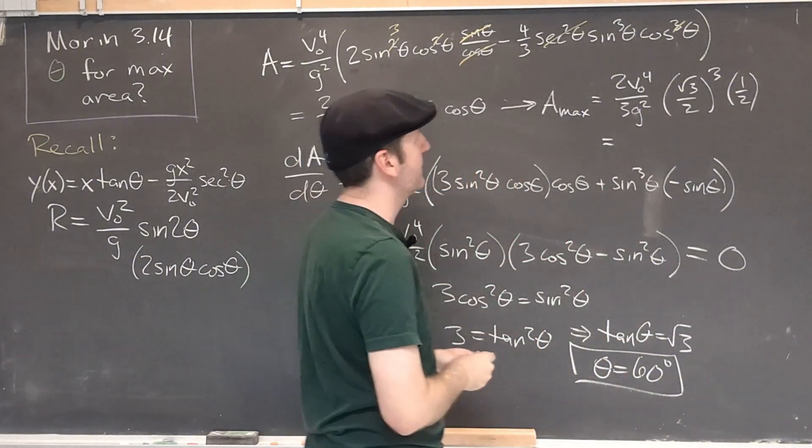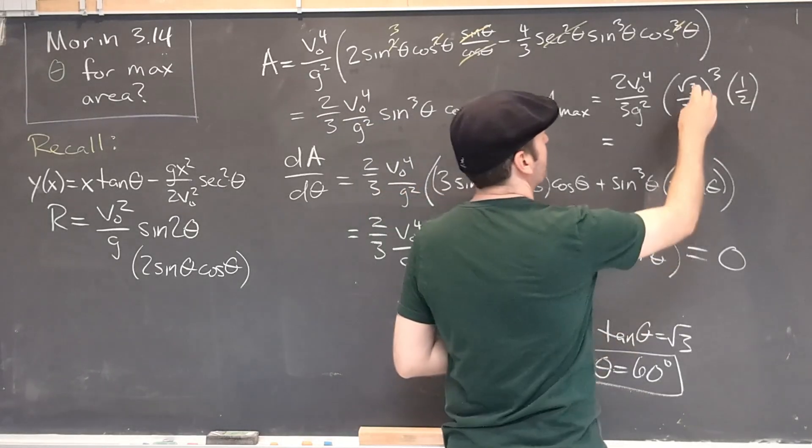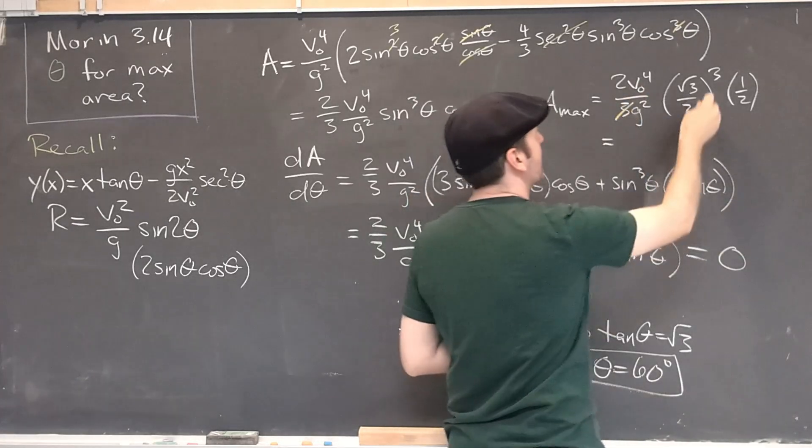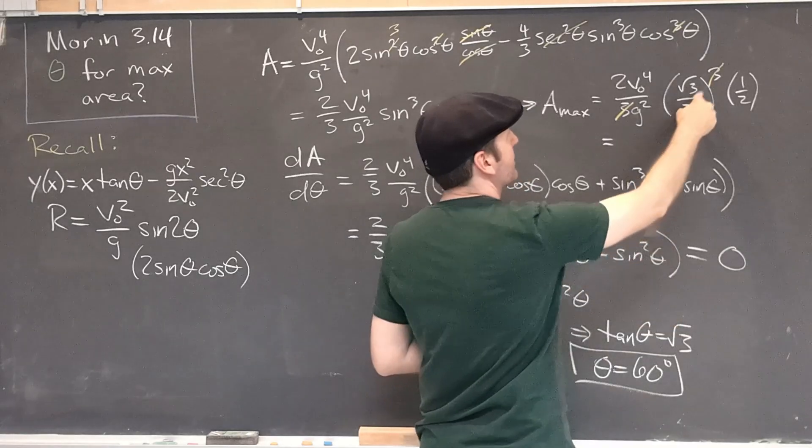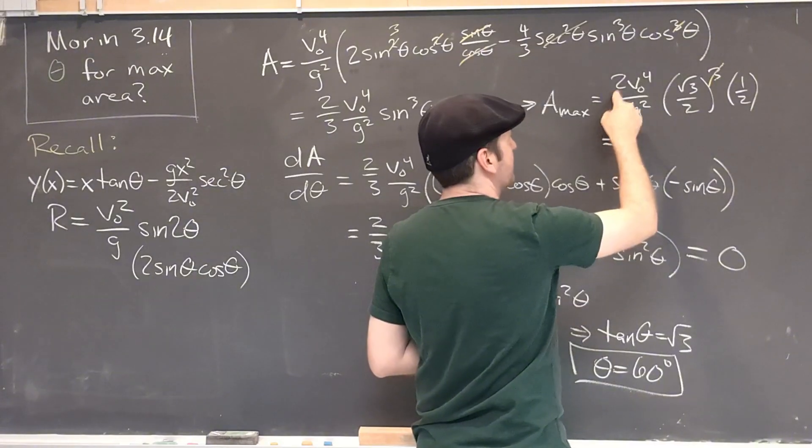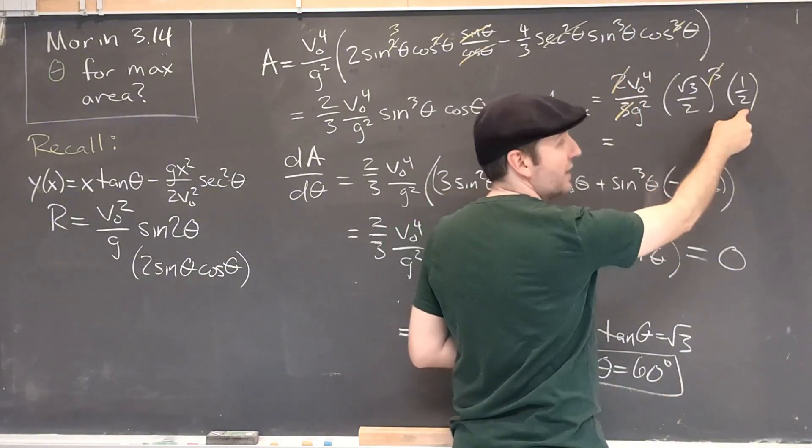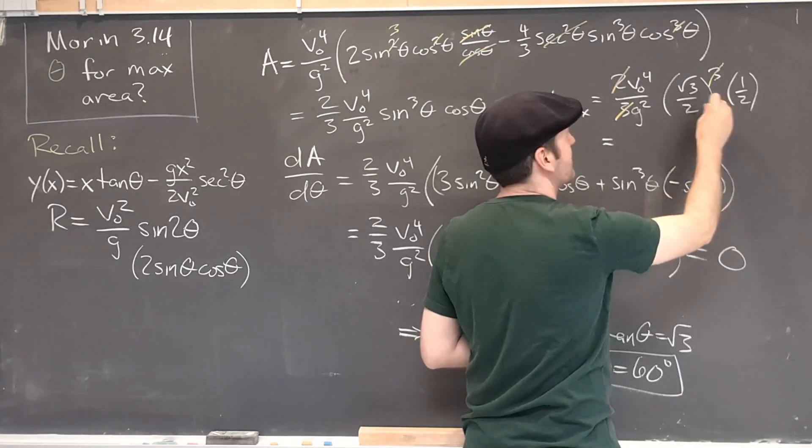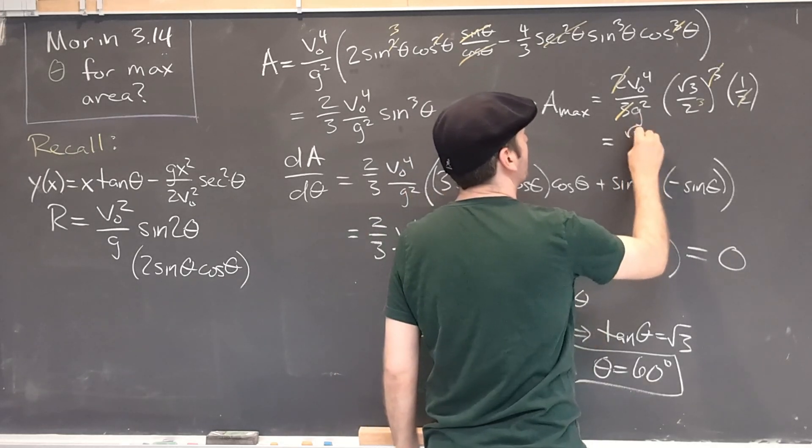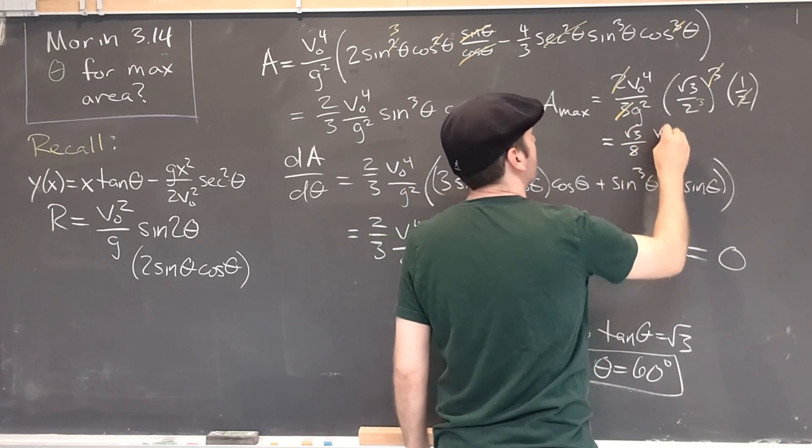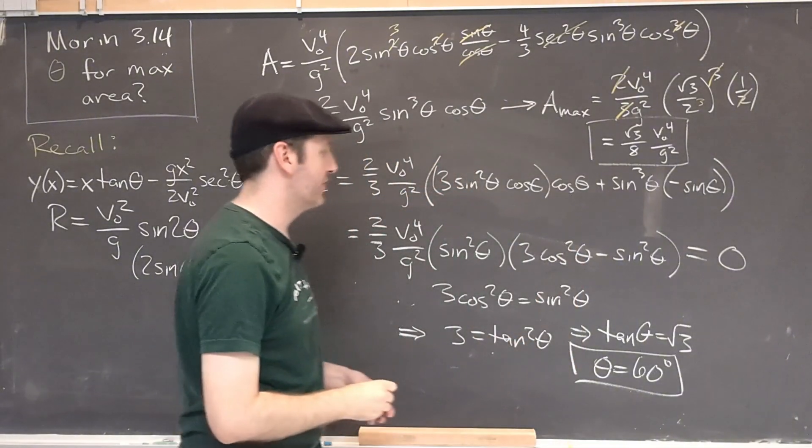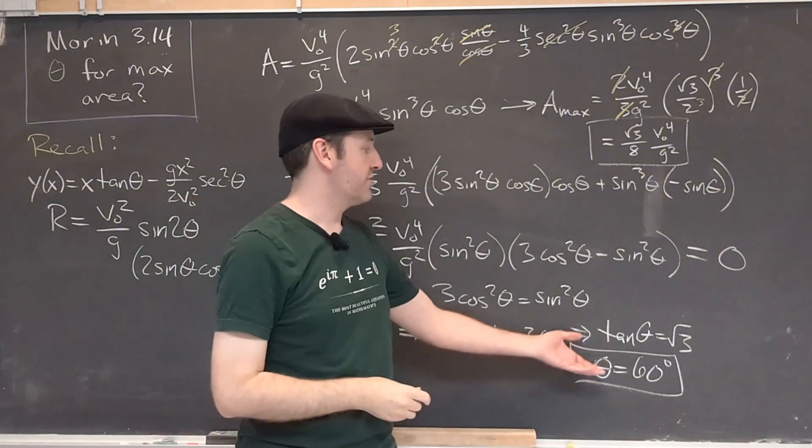Substituting that all together gives us our final result for the maximal area. Let's see if we can do some cancellations here. So this root 3 cubed will be 3 root 3. The 3 in the denominator will cancel with that and just leave a root 3. The 2 cubed here and one of these 2s will cancel, leaving a 2 squared but another 2, which means it's leaving us a 2 cubed. So at the end of the day, we've got root 3 over 8, V₀ to the fourth over g squared is my maximal area for this projectile when it is launched at 60 degrees.